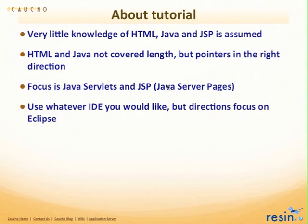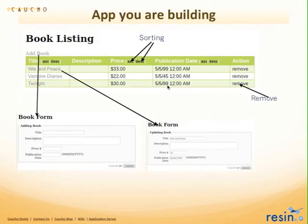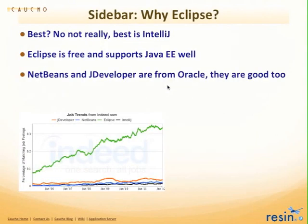The focus really is on Java Servlets and JSP. You can use whatever IDE you like — we are using Eclipse. This is the basic app you're going to build in the first four cookbooks. You click the 'Add Book' link, it pops up a book form page. You can sort the headers, edit a book, add a book, remove a book, and list a book. Those are the basic CRUD operations: create, read, update, delete.